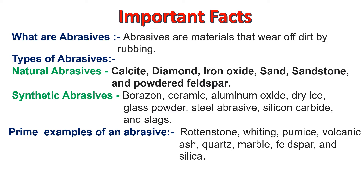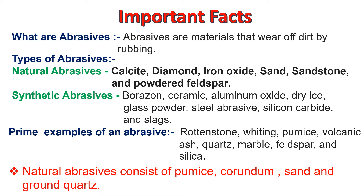Let us know some prime examples of abrasives: Rotten Stone, Whiting, Pumice, Volcanic Ash, Quartz, Marble, Feldspar, and Silica. Natural abrasives consist of Pumice, Corundum, Sand, and Ground Quartz.